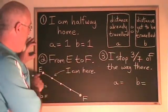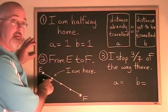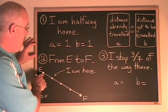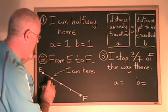If I am going from point e to point f on this line, and I am here, I can see that my a, the distance already traveled from e to here, is one unit.